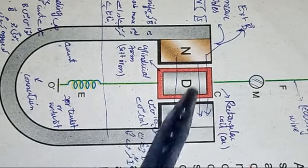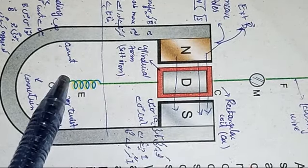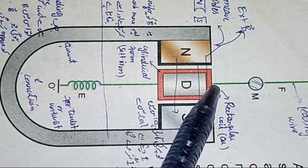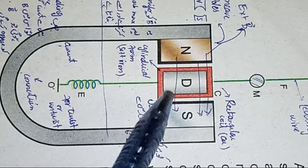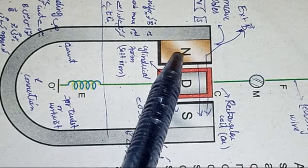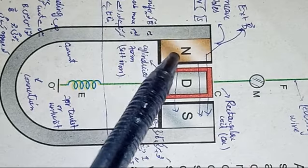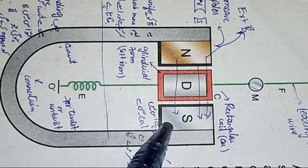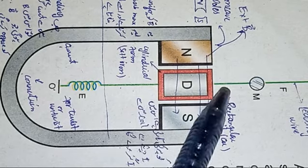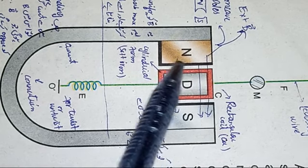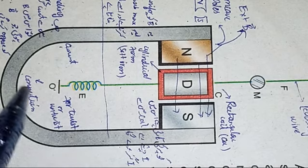Now pay attention. This is the construction of a moving coil galvanometer. A rectangular coil C is suspended between concave-shaped poles — north pole and south pole — of a U-shaped magnet. For MCQs, remember: these two poles are concave-shaped. The magnetic field lines start from the north pole and end on the south pole. I have taken the diagram horizontally.